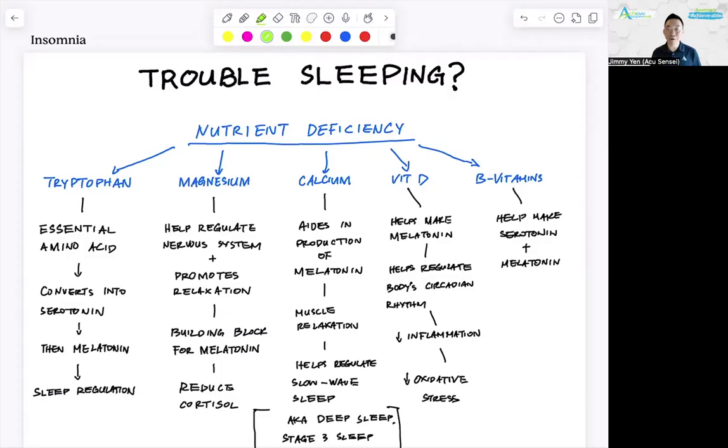This is a quick overview of what we previously discussed. So trouble sleeping, and there's five main nutrient deficiencies that can cause insomnia. One is a deficiency of tryptophan, magnesium, calcium, vitamin D, and other B vitamins. Today I'm going to go over specifically magnesium.